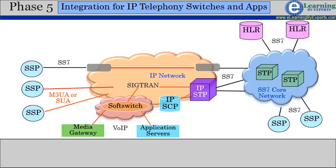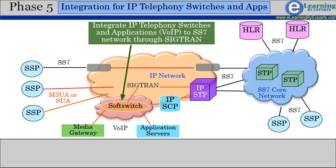Phase 5 of SIGTRAN involves the integration of IP telephony with legacy SS7 networks. Soft switches convert the SS7 messages received over SIGTRAN to VoIP protocol messages and vice versa. This completes the integrated IP architecture, where SIGTRAN provides IP support in SS7 networks and voice over IP protocols control the IP telephony network.